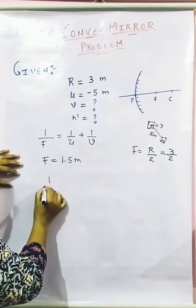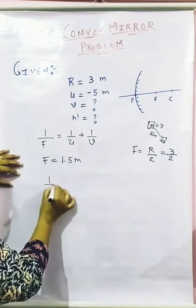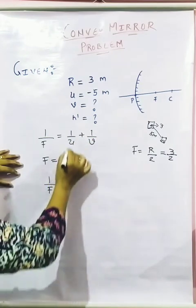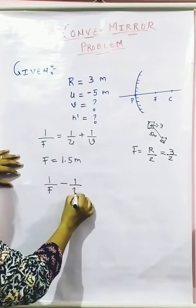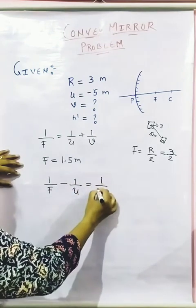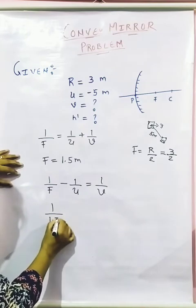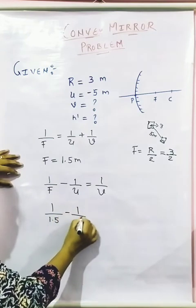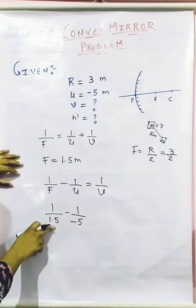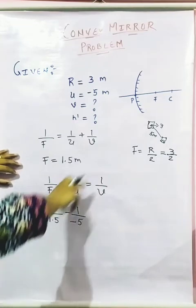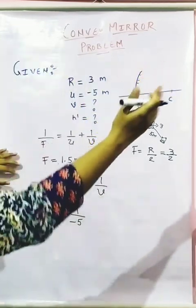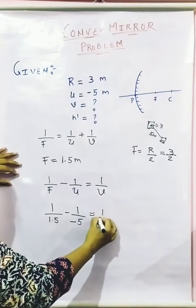So I am going to substitute this value because I need to find out V. I am going to write it down: 1/F minus 1/U = 1/V. So what is 1/F? F is 1.5. Minus 1/(-5). Why I have considered here plus? Because F is lying on the right side of it. 1/V.